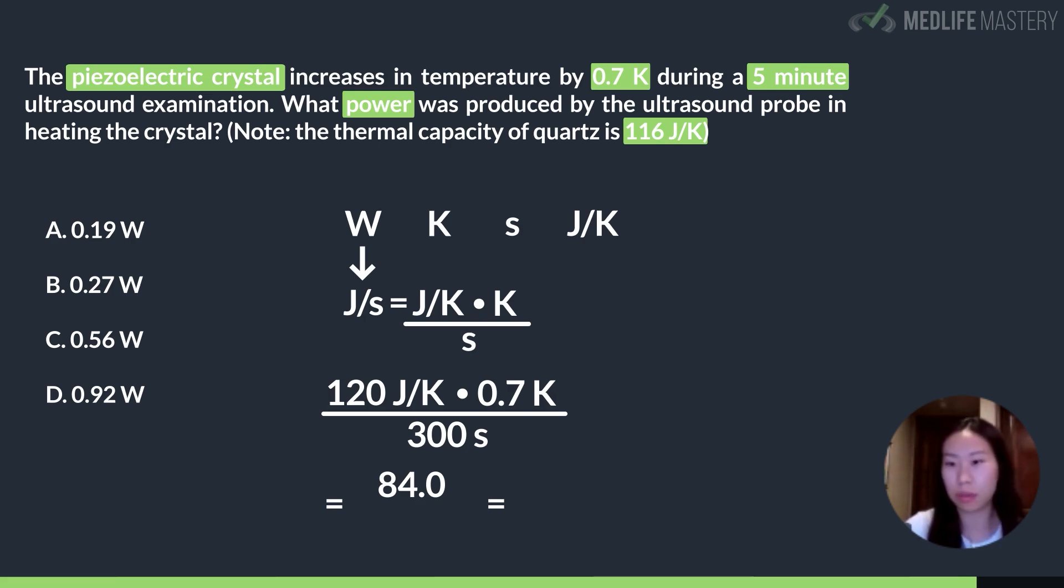And then technically, since it would be 120 times 7 would be 84, but then we have a decimal point here, so we're going to put that decimal point here. Then we have 300 down here. So then I'm going to make this, if we divide 84 by 3, that should give us 28. And so then our answer should be around 0.28.